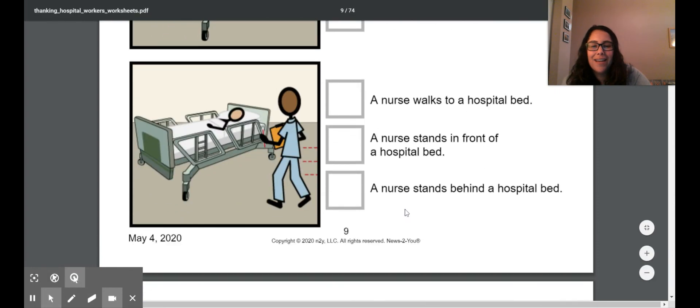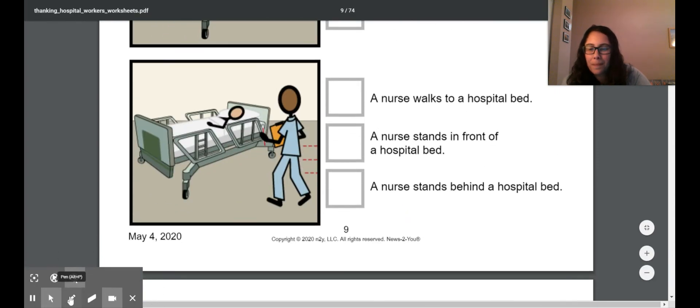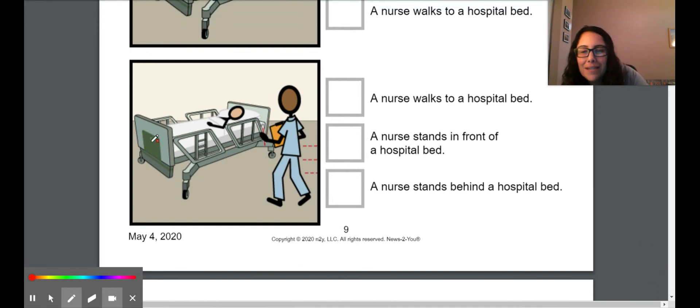All right, last one. Again, we see the hospital bed. And this time, see these little red lines and her legs bent? It looks like she's walking. All right, let's look at our sentences. A nurse walks to a hospital bed.